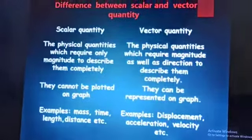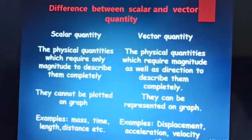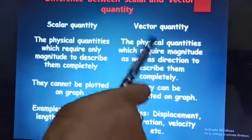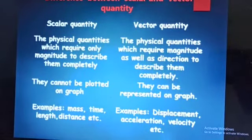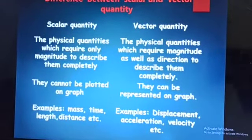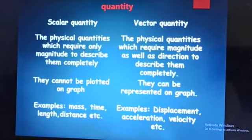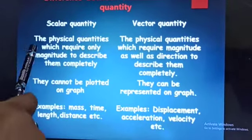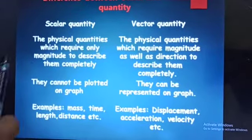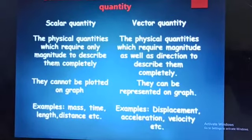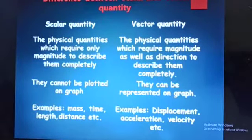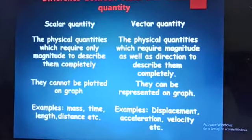The difference between scalar and vector quantity: scalar quantities are the physical quantities which require only magnitude to describe them completely. This magnitude-based description is called a scalar quantity.